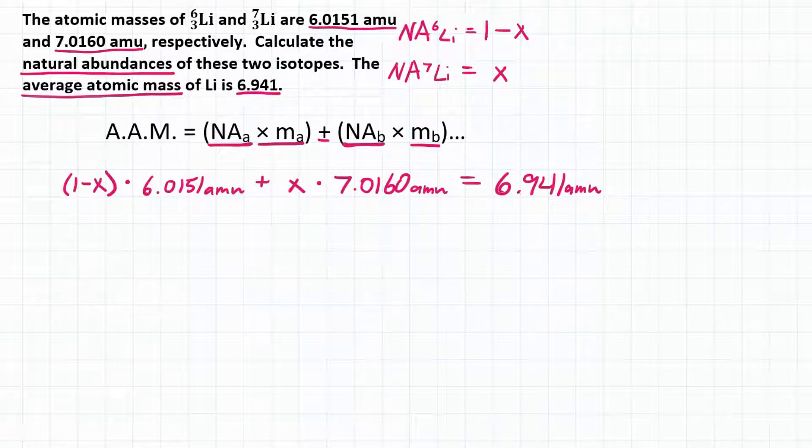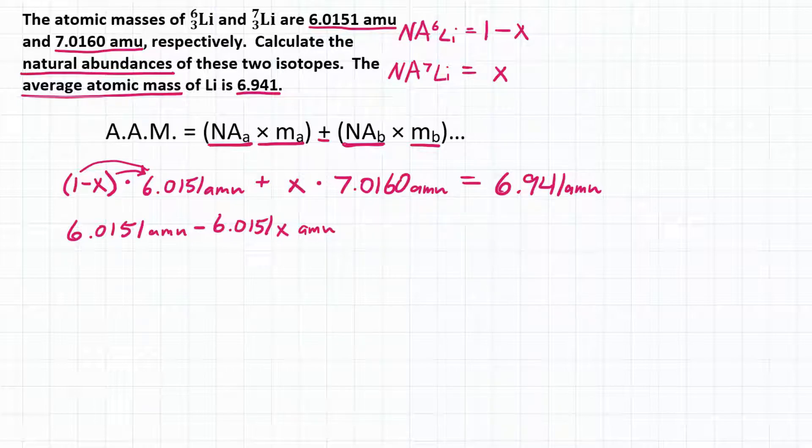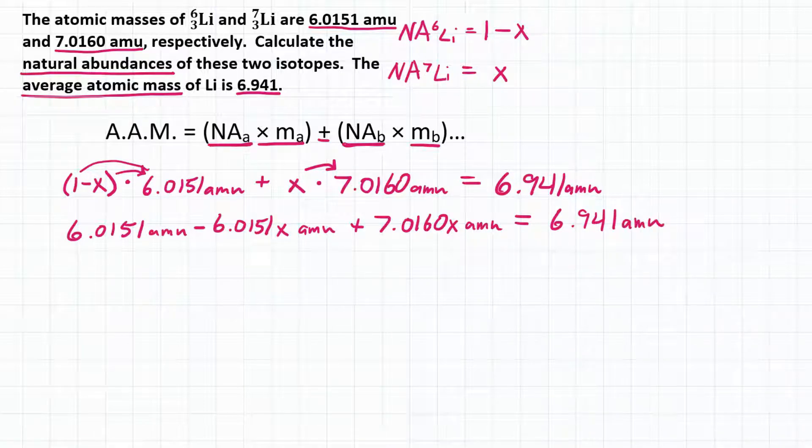Okay, so now we need to do a little bit of algebra. Let's multiply 1 and X both by 6.0151 AMUs. So we're going to get 6.0151 AMUs minus 6.0151 X AMUs, and then multiply X by 7.0160 gives us 7.0160 X AMUs. And that is still equal to 6.941 AMUs.